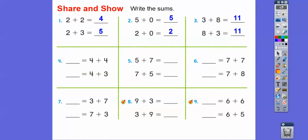4 + 4 = 8, and then 4 + 3 is going to be one less than 4 + 4. So one less than 8 is 7. 5 + 7, 7 + 5, those are the same.